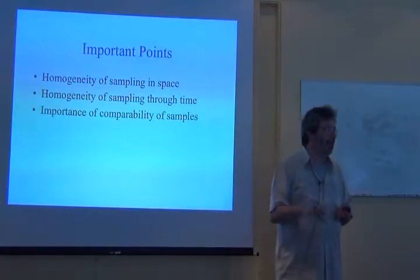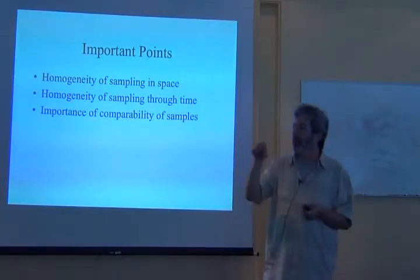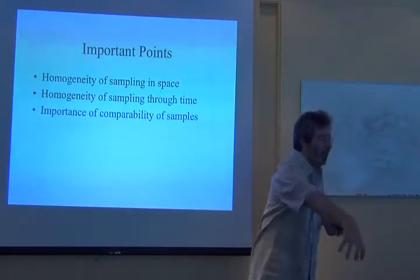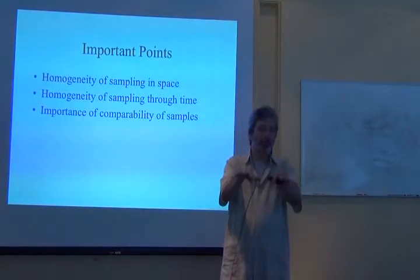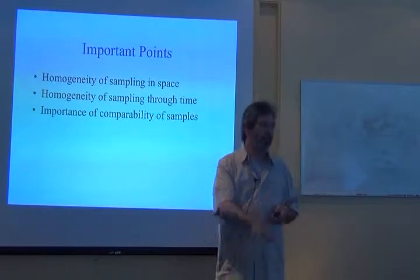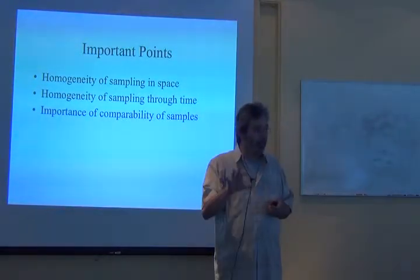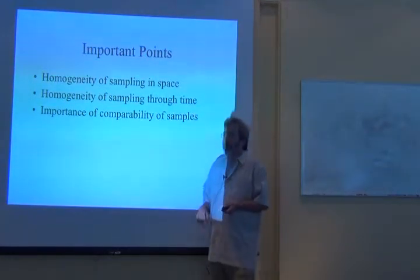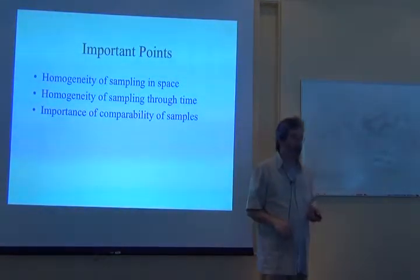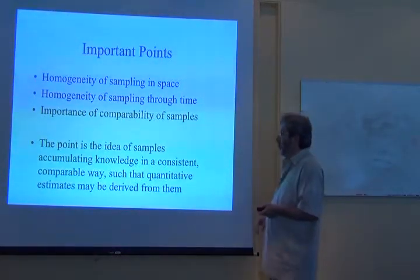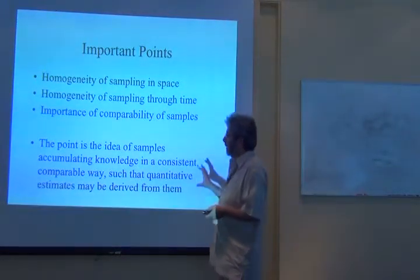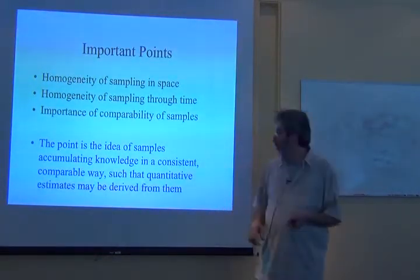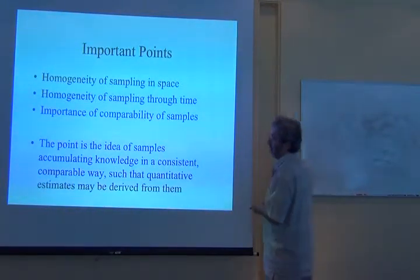Essentially, what we're talking about is that each sample has to be comparable to each other sample. It has to be kind of picking blindly from a pool, but without biases in what part of that pool of species I pick from. Otherwise, it's going to be very hard to make any conclusions from these inventory data. So essentially, we're after accumulating samples in a consistent and comparable way such that quantitative estimates can be derived from them.